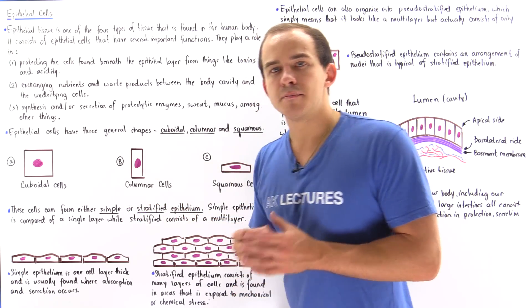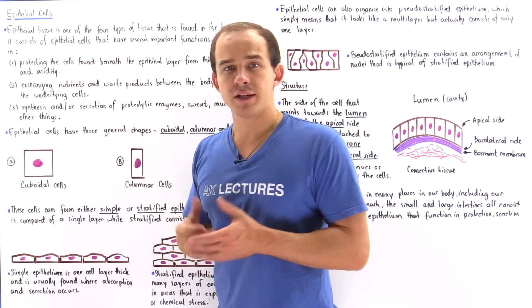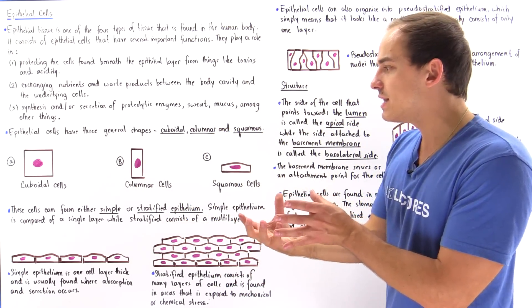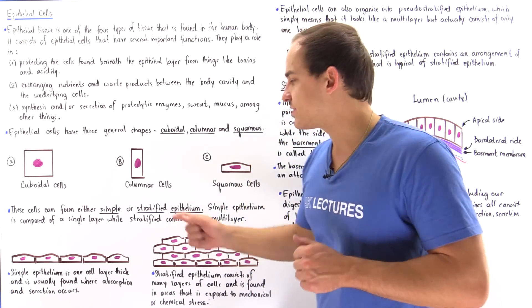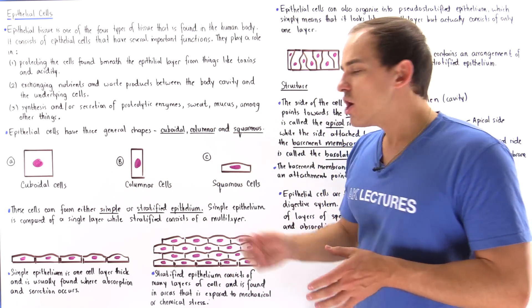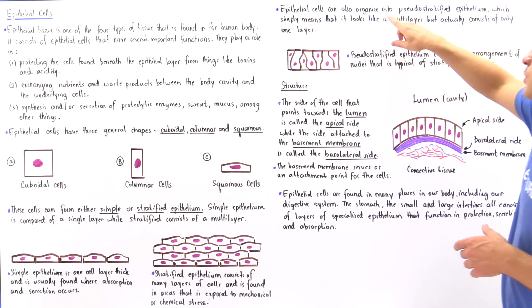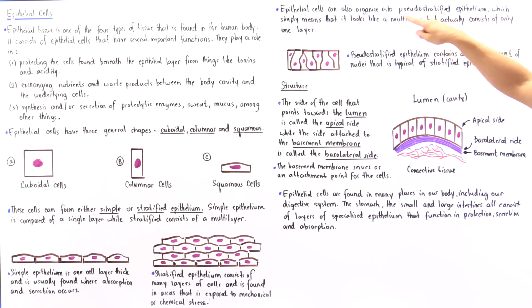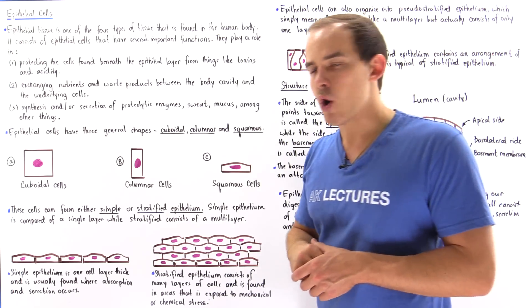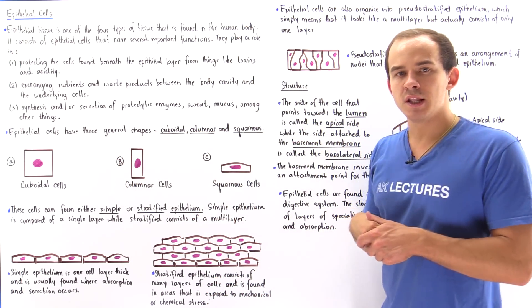Now these cells can basically organize themselves to form our epithelial tissue, or the epithelium, and epithelium can be organized in three different ways. We can have simple epithelium, we can have stratified epithelium, and we can also have something known as pseudostratified epithelium. Let's first discuss simple and stratified epithelium.